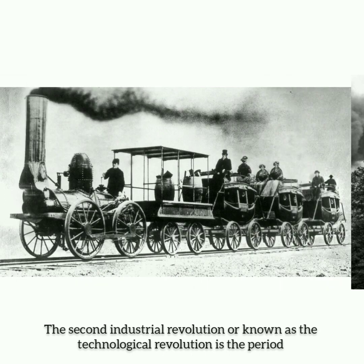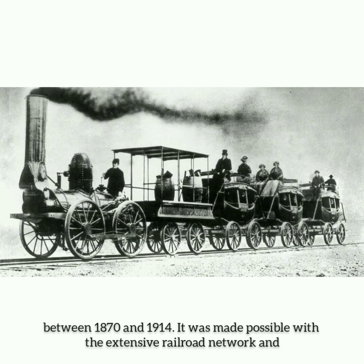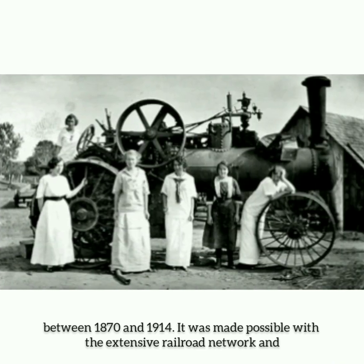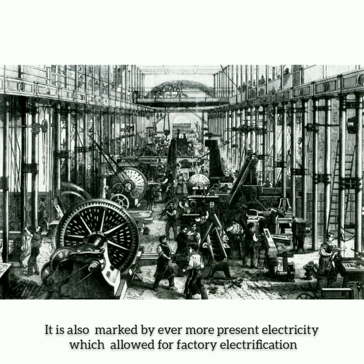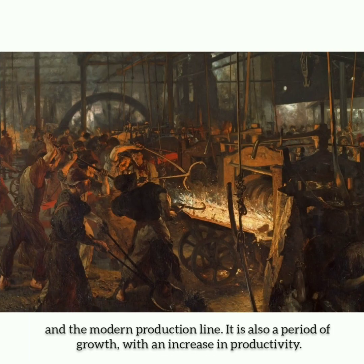The second industrial revolution, also known as the technological revolution, is the period between 1870 and 1914. It was made possible with the extensive railroad network and the telegraph, which allowed for faster transfer of people and ideas. It is also marked by ever more present electricity, which allowed for factory electrification and the modern production line, and is also a period of growth with an increase in productivity.